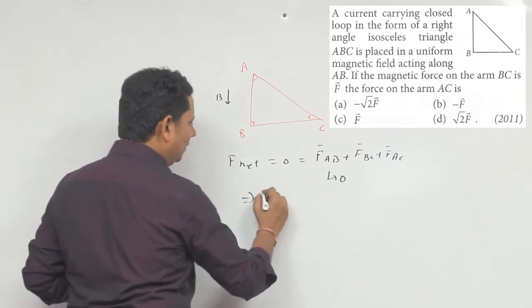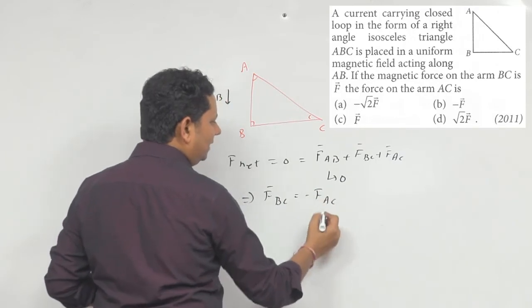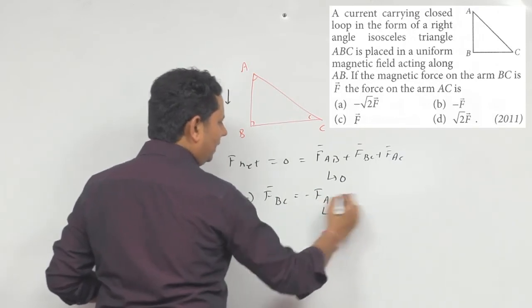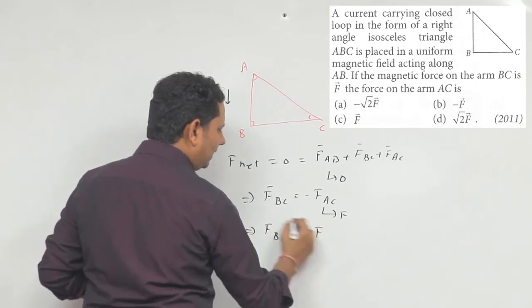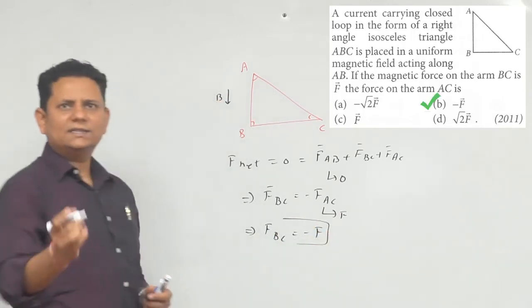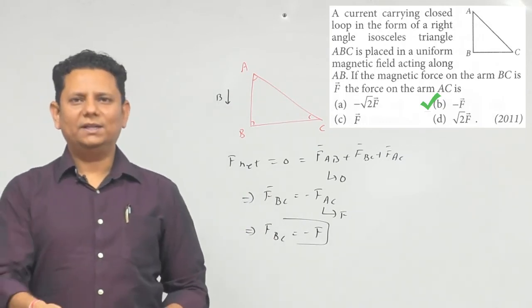Which implies force on BC will be equal to minus times force on AC. So based on this, option number B, minus F, would be the right answer.